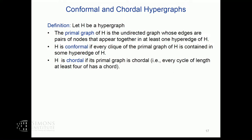What do conformal and chordal mean? Given a hypergraph, we associate a primal graph — an undirected graph whose edges are pairs of nodes that appear together in at least one hyperedge of H. The hypergraph is conformal if whenever you have a clique in the primal graph, there is some hyperedge that contains that clique. The hypergraph is chordal if the primal graph is chordal, meaning every cycle of length at least four has a chord — two non-adjacent nodes that are adjacent.